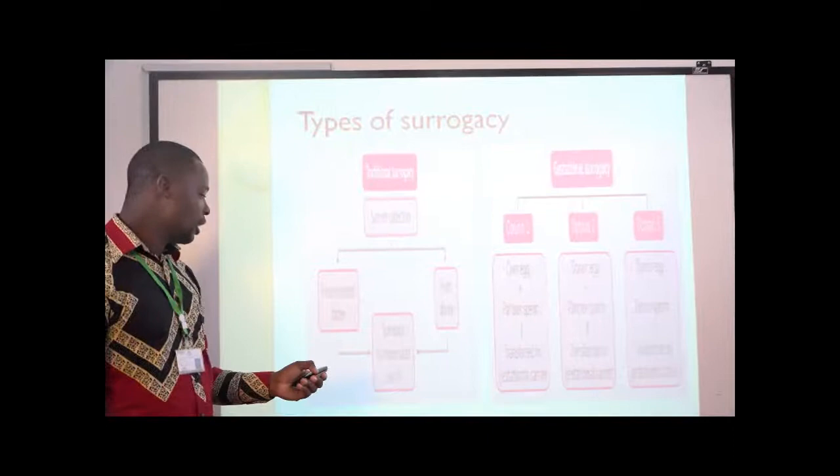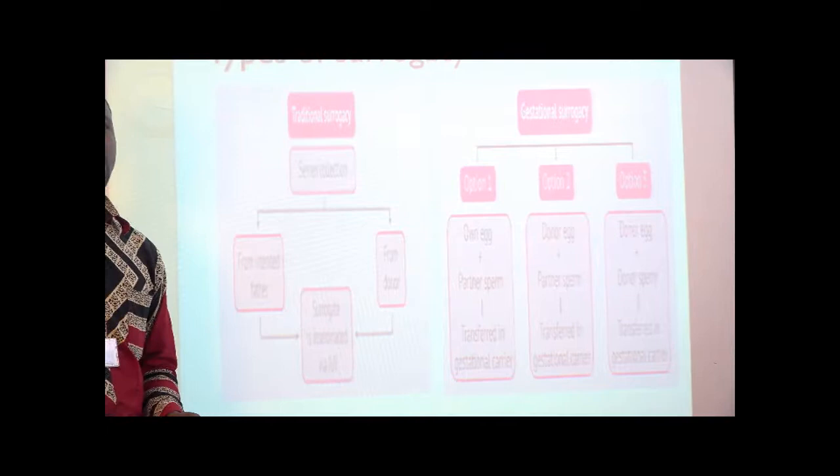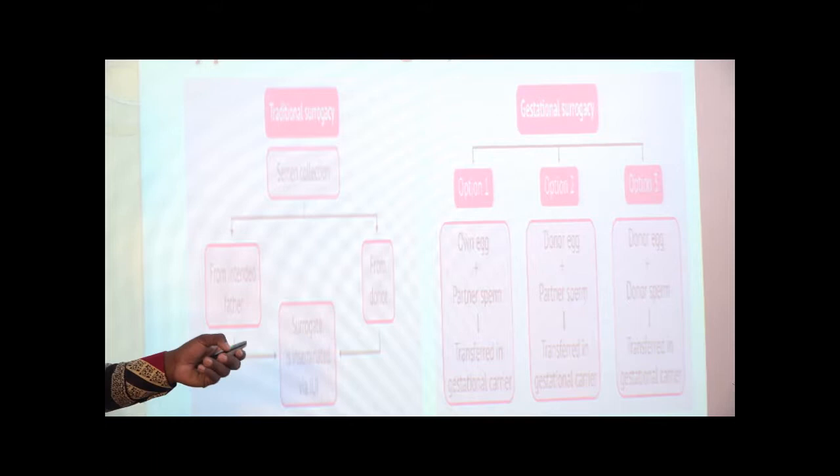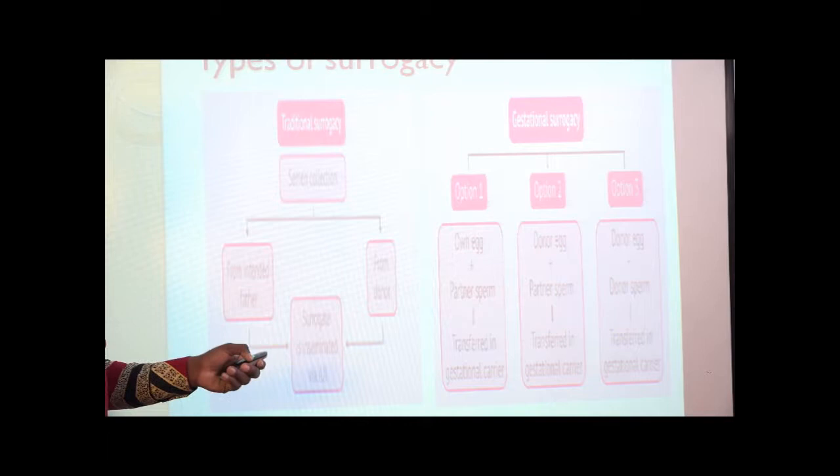Gestational surrogacy, which is a more technological form of surrogacy, can occur in three options. In option one, the intended parent's egg will be used together with the intended parent's sperm. The embryo will then be transferred to the gestational carrier, who will carry the pregnancy, resulting in a child that belongs to the intended parents.